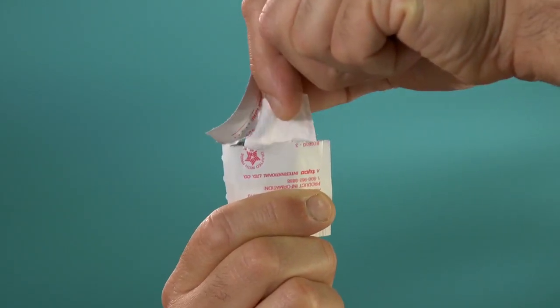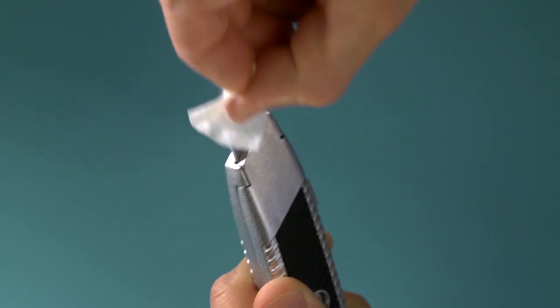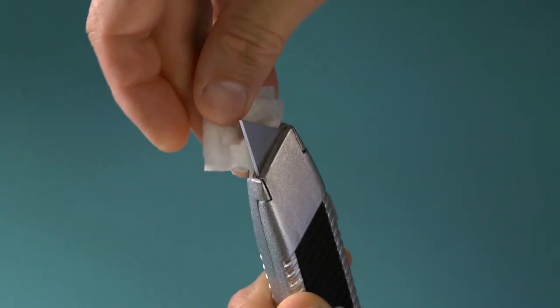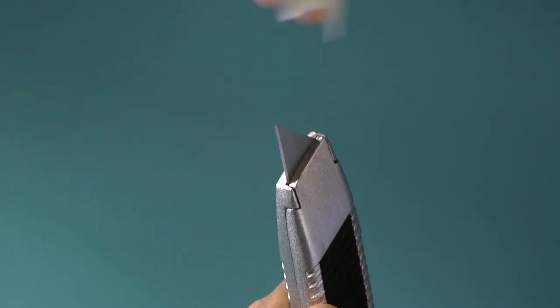You should also have some alcohol wipes on hand to clean the blade of the knife before and after testing each area. This is done to prevent cross contamination.